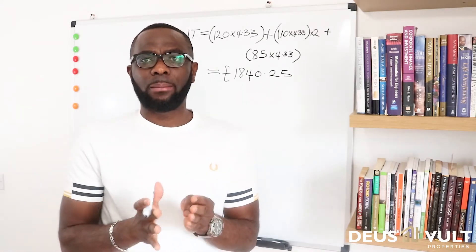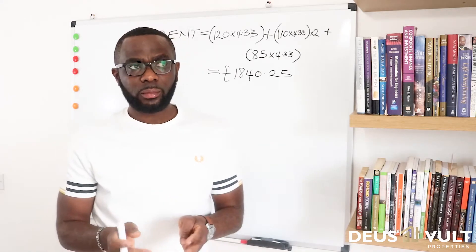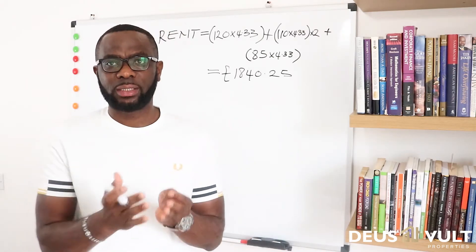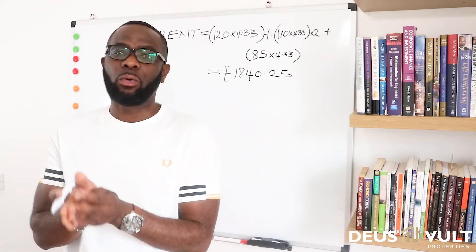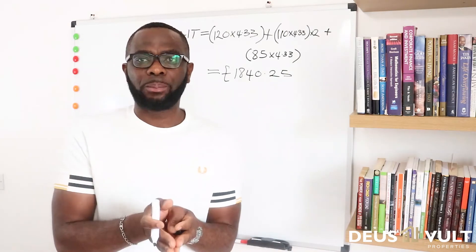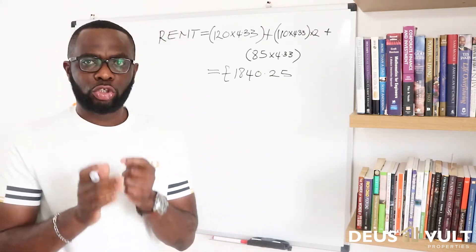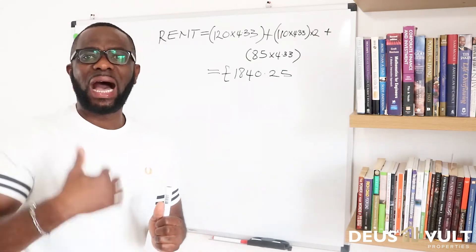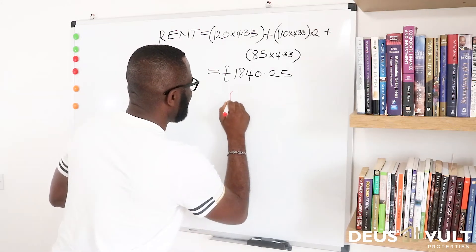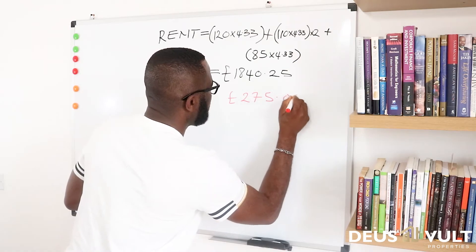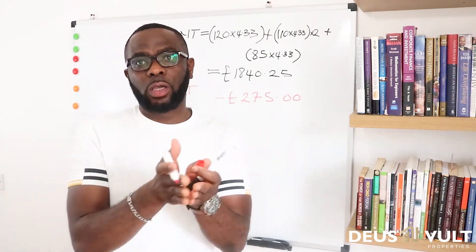The next thing to consider is our mortgage. For this particular property, we're paying 4% interest on a 75% loan-to-value mortgage. The property was valued at £110,000, so the bank loaned us 75% of £110,000, which is £82,500. At 4% interest-only, that works out to £275 per calendar month. I'm using my red pen for this because it's money going out of our rent — mortgage: minus £275.